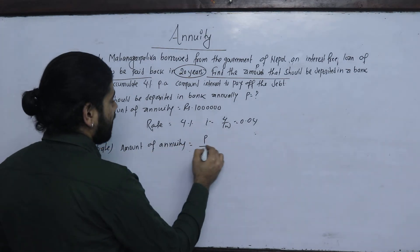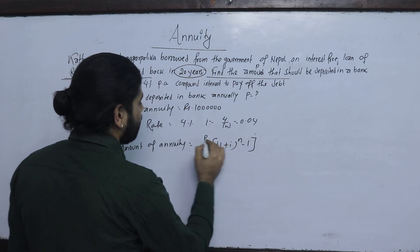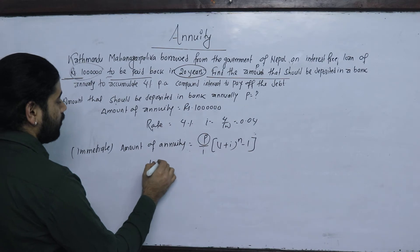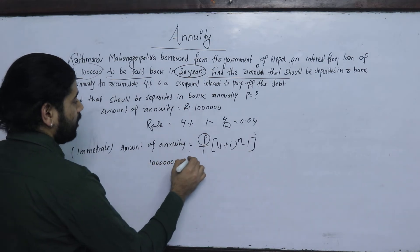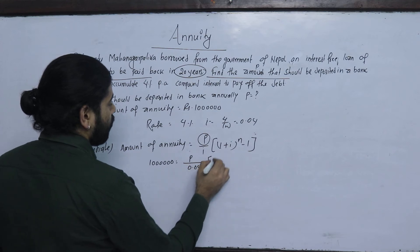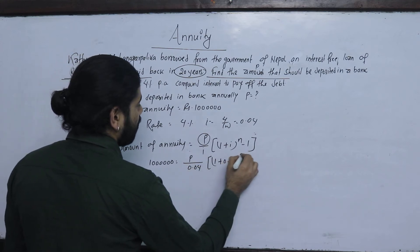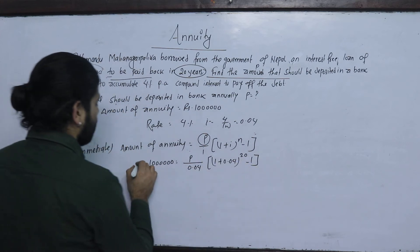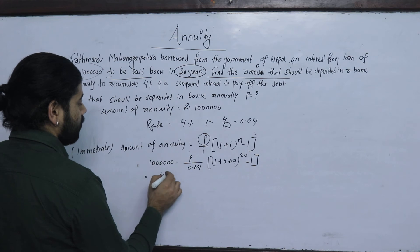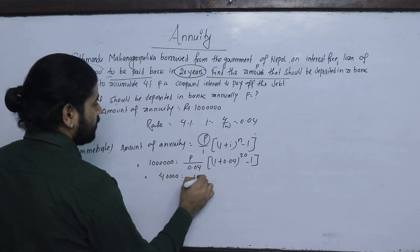P = R · i / ((1 + i)^n − 1). The amount is 10,00,000. P: when I = 0.04, (1 + 0.04)^20 − 1. The 0 cancels, so 1.04^20.